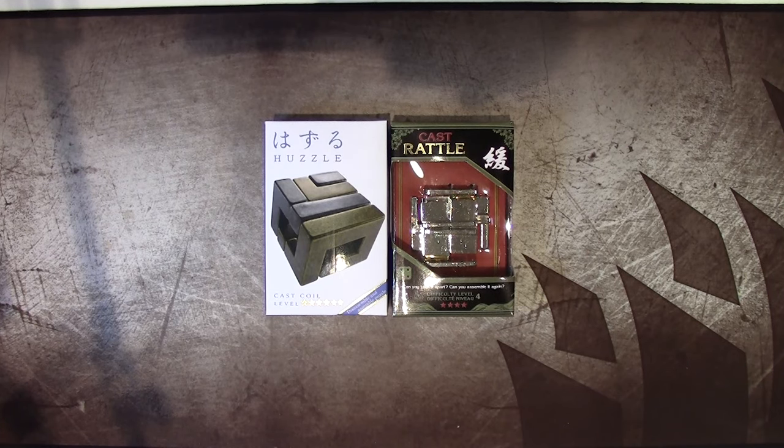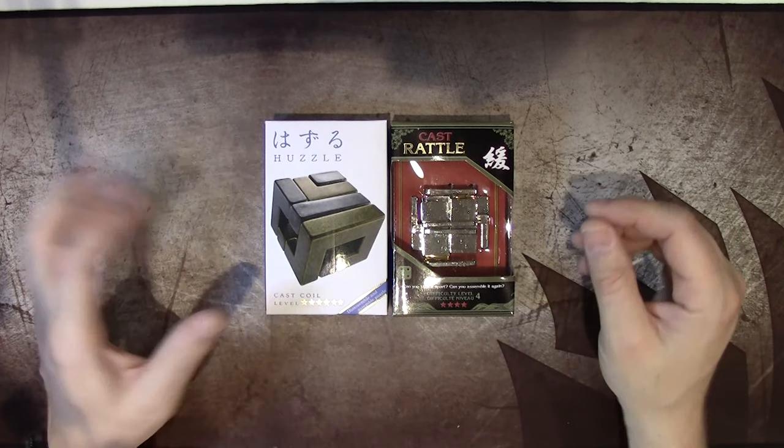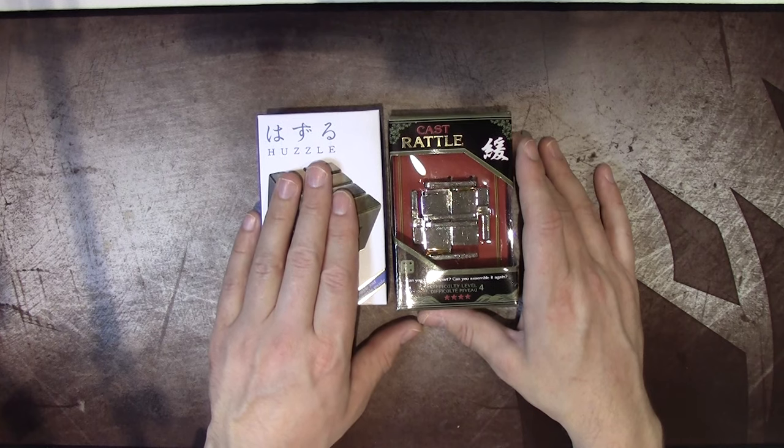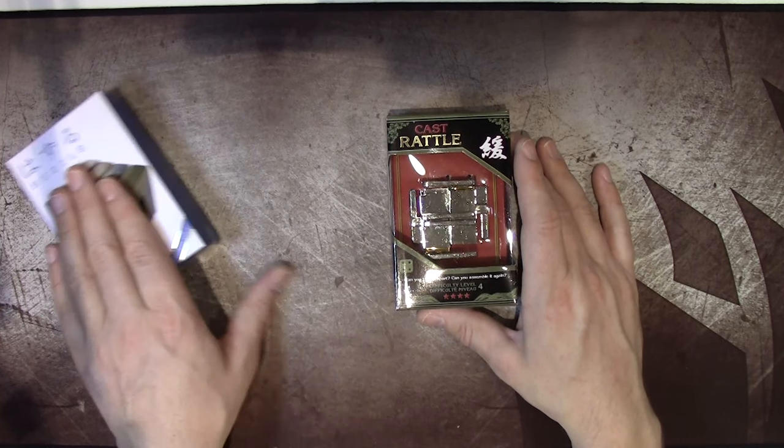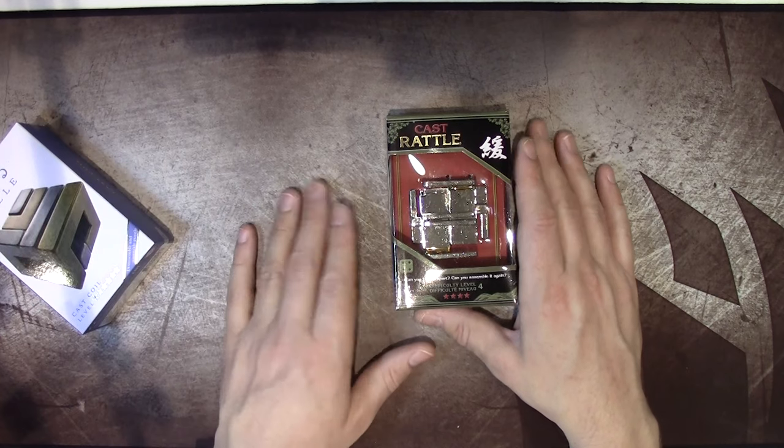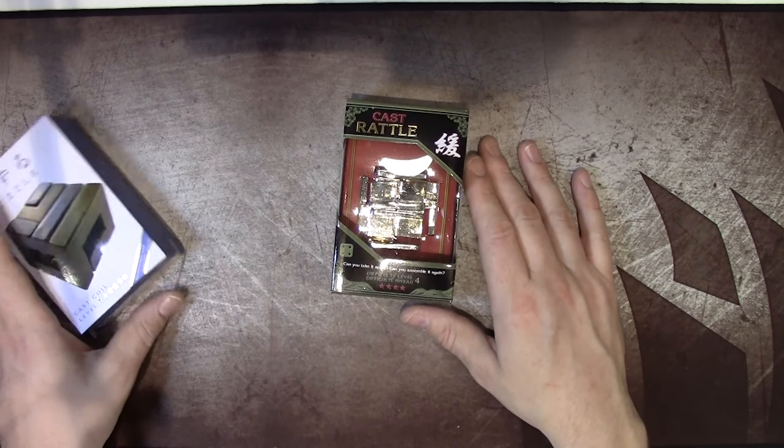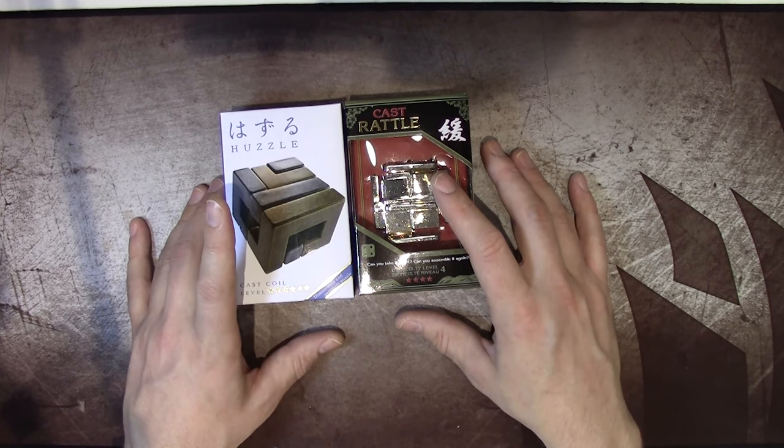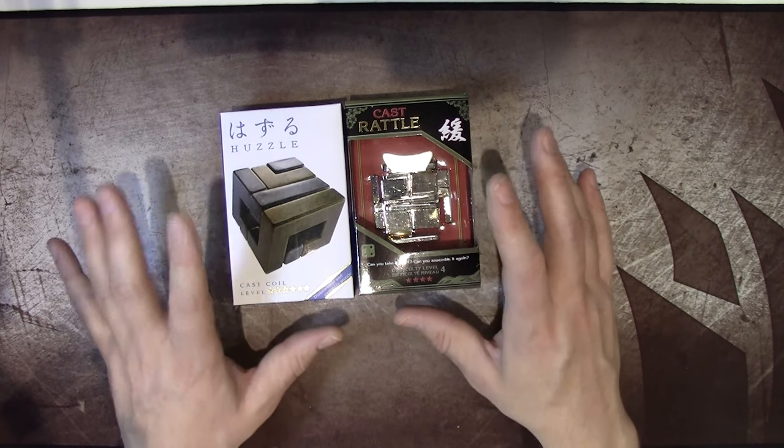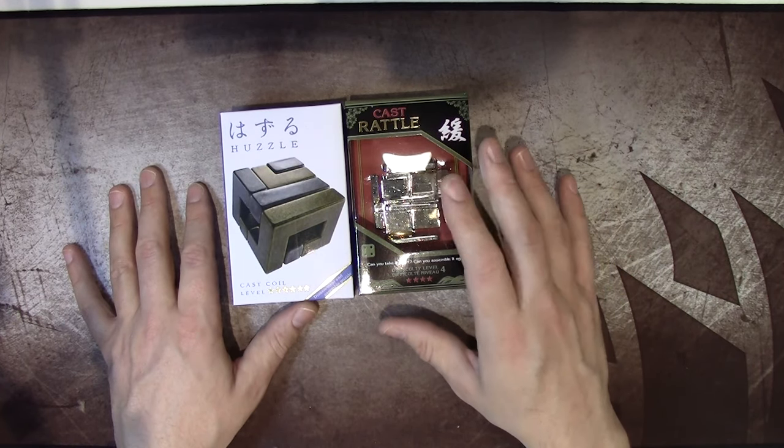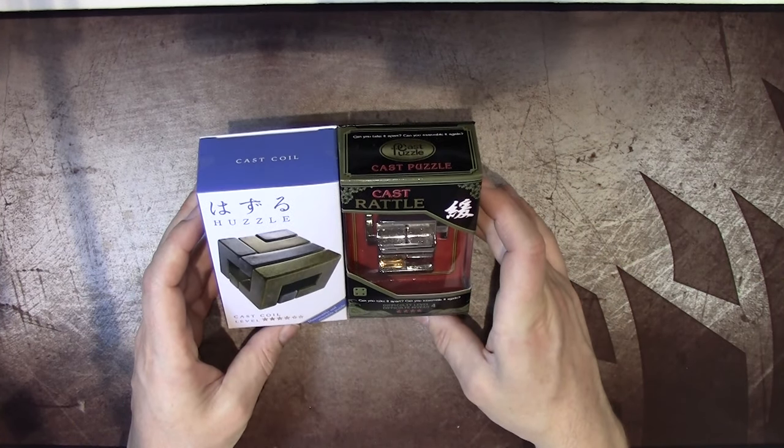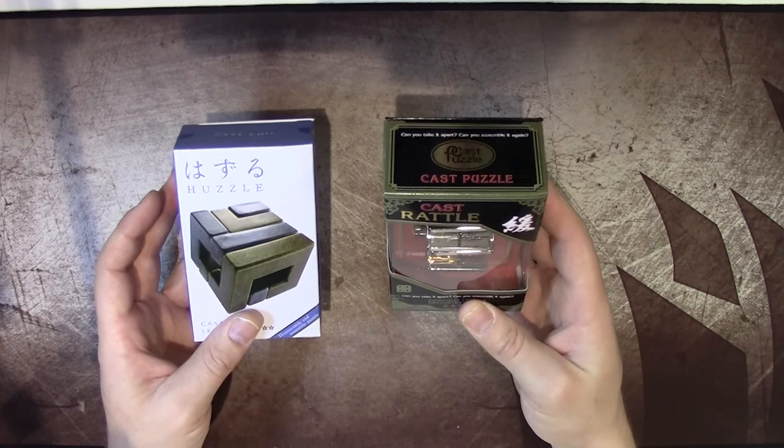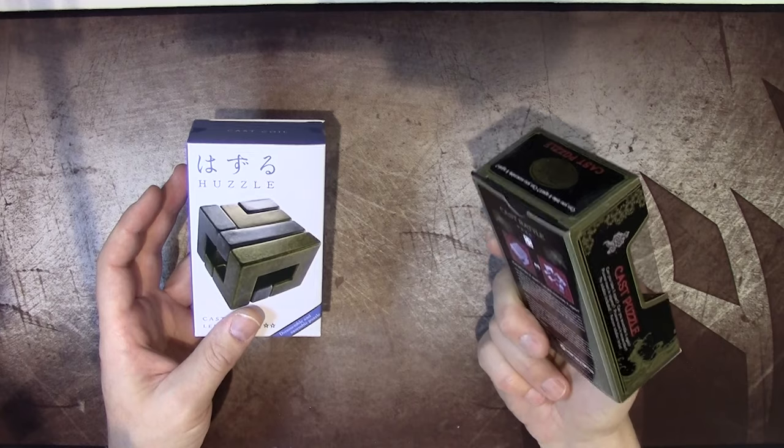All right, we are back with more puzzles. I bought this one and it took a while to get in the mail. In the meantime I forgot about it and bought this one as well. They're both level fours. Luckily when I was looking at this I also looked at this again but I didn't buy that, so I don't have two of it which is nice. But I did buy this one - it's the Cast Coil and the Cast Rattle. Yeah, it does rattle.